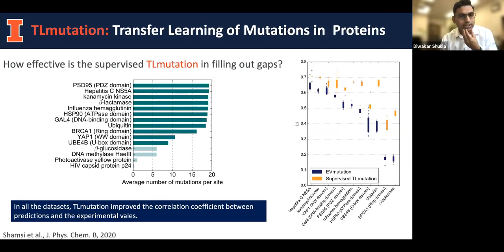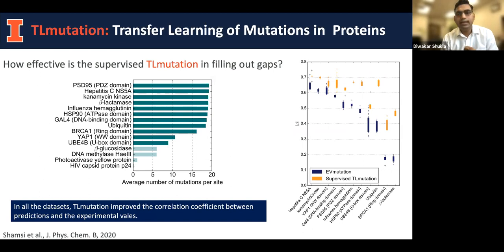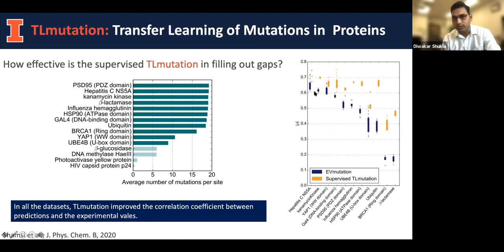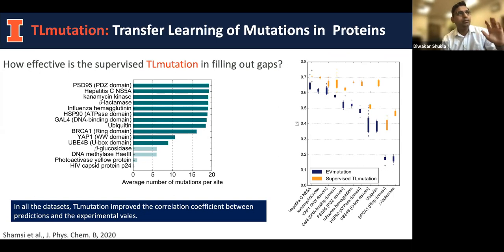We found about 12 datasets in literature with single-point mutation data for different proteins. We asked: if we have half the experimental data, can we predict the other half? Comparing to other variant effect predictors, after optimizing TL mutation on all these datasets, we achieve much higher performance than the gold standard EV mutation. We get improvement even for incomplete datasets — even with 0 to 20 mutations per site — and performance is still better than the gold standard. This means the black boxes in the experimental dataset can be filled.